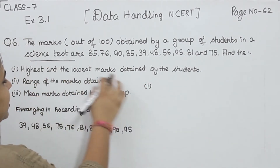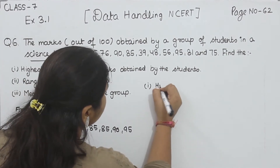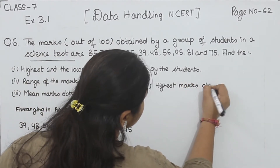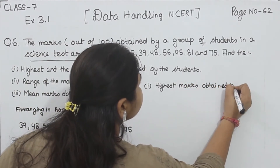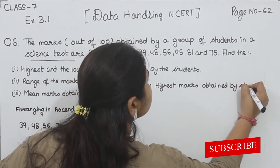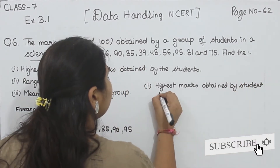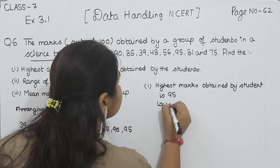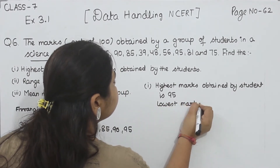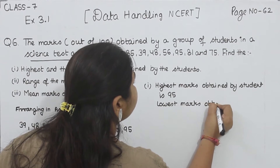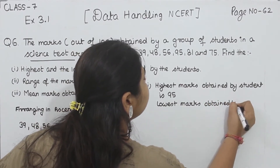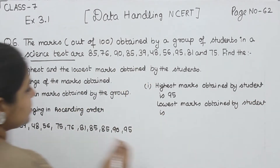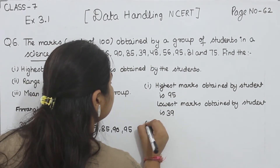Part 1: highest and the lowest mark obtained by the student. Highest marks obtained by student is 95. Now lowest marks — the lowest marks is 39. This is part 1.